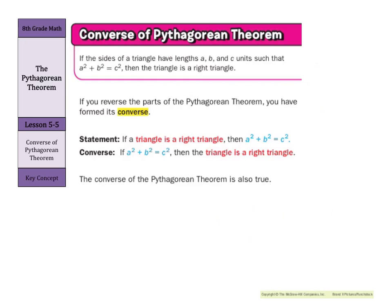Now we also have something called the converse of the Pythagorean theorem. If the sides of a triangle have lengths A, B, and C such that A squared plus B squared equals C squared, then the triangle is a right triangle. If you reverse the parts of the Pythagorean theorem, you have formed its converse. Instead of saying 'if a triangle is a right triangle, then A squared plus B squared equals C squared,' we reverse it: if A squared plus B squared equals C squared, then the triangle is a right triangle. The converse is also true.